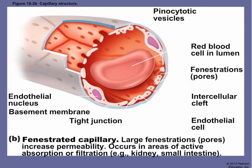Fenestrated capillaries — from the Latin 'fenester' meaning window — have large fenestrations or windows that increase permeability. We find these in areas of active absorption or filtration, such as the kidney and small intestine. The small intestine absorbs nutrients from food into the bloodstream, so it requires special pores in the endothelial walls that readily allow passage of nutrients from the interstitial spaces into the capillaries.